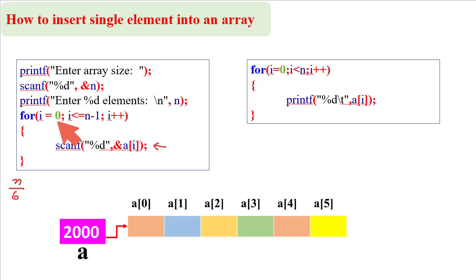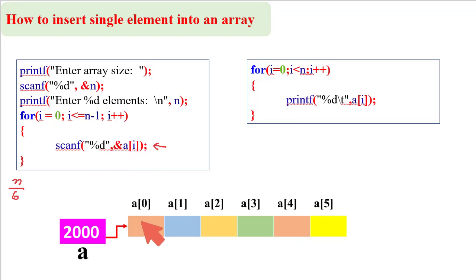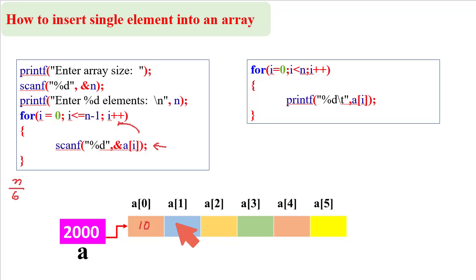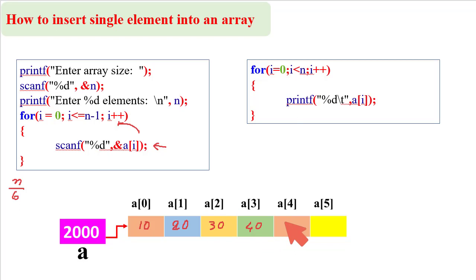When the for loop executes, the starting value of i is 0. When the scanf instruction executes and data is given from the keyboard, that data is stored into memory location A[0] — say I entered 10. Then i increments, and the next value is stored at A[1] — say 20. This continues up to i equals 5. The values entered are 10, 20, 30, 40, 50, and 60.